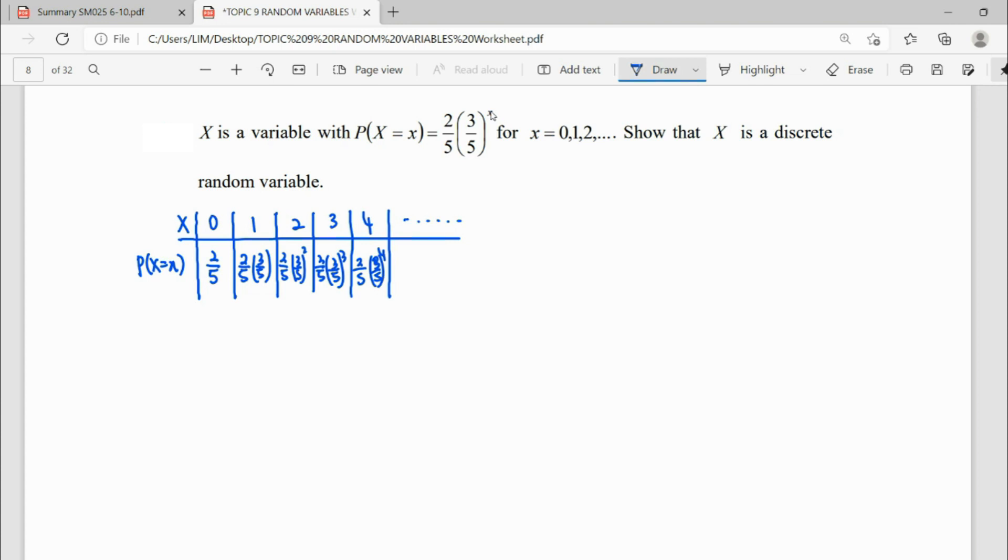To show that this is a discrete random variable, we have to know what is the total of the probability. This total of probability—you can see for the first random variable 2 over 5, then when X equals to 1, it will be like this probability, and X equals to 2, 3, 4. Actually we still have 5, 6, 7, 8.